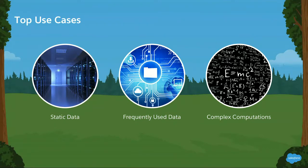Frequently used data is also a great candidate. If your account reps are using exchange rates every day, going back and forth to an external system is expensive. But if you store it internally in your Platform Cache, that's a lot faster. And complex computations — keep in mind that whenever you make these computations, it's not just time that you're wasting, but also infrastructure resources like CPU and electricity. If you store that in your cache and refer back to it later, that saves not only time but also those resources.